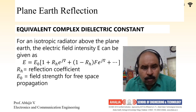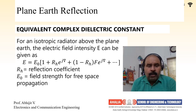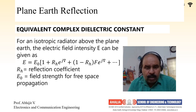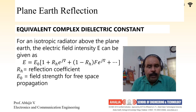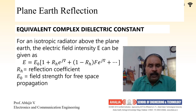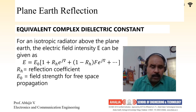For an isotropic radiator above the plane earth, the electric field intensity E is given as E = E₀·(1 + R_H), where R_H is a reflection coefficient whose derivation is in the textbook. E₀ is the field strength for free space propagation, and additional terms include e^(jδ) and (1 − R_H)·f·e^(jδ) components.